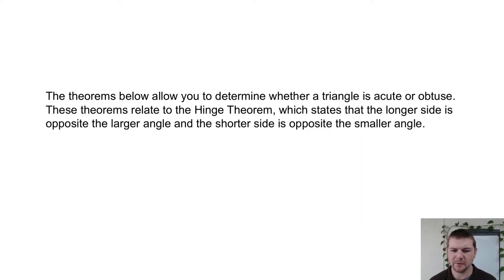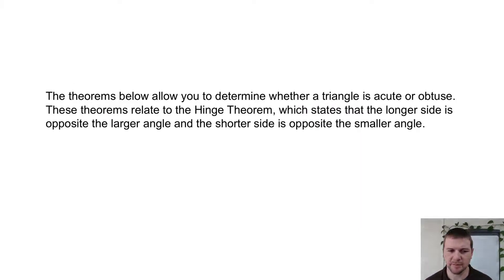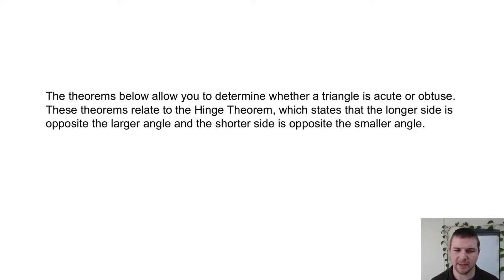The theorems below allow you to determine whether a triangle is acute or obtuse. These theorems relate to the hinge theorem, which states that the longer side is opposite the larger angle, and the shorter side is opposite the smaller angle.